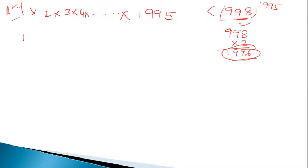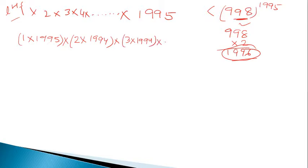We take the terms 1 and 1995 together, then 2 and 1994 together, then 3 and 1993 together, and so on. To understand this pairing, let's consider a smaller series: 1 × 2 × 3 × 4 × 5. We pair the outer terms: 1 with 5, 2 with 4, and the middle term is 3.